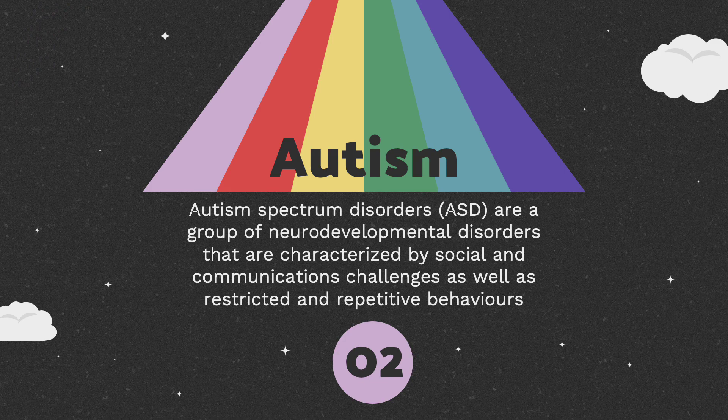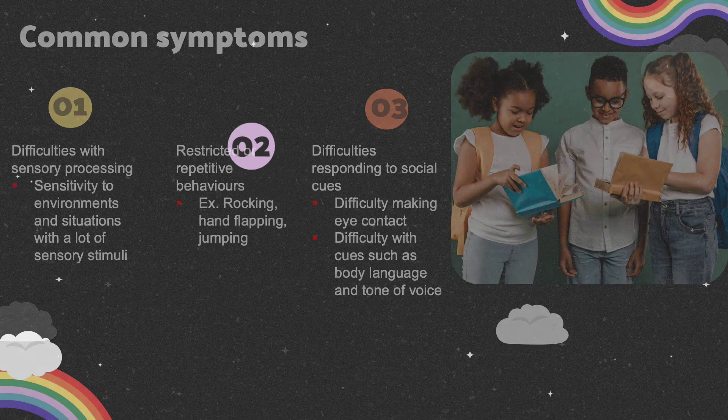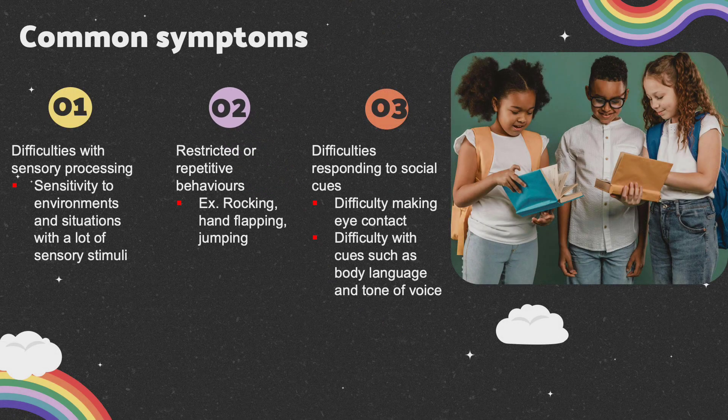Autism spectrum disorders are a group of neurodevelopmental disorders that are characterized by social communication difficulties as well as restricted and repetitive behaviors. Some of the common symptoms include difficulties with sensory processing, which can lead to sensitivity in environments and situations with a lot of sensory stimuli. Similarly to OCD, people with autism display restricted and repetitive behaviors.